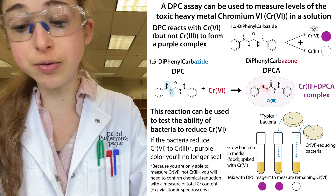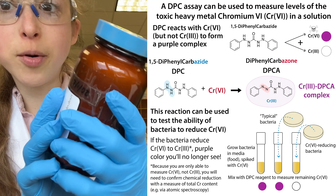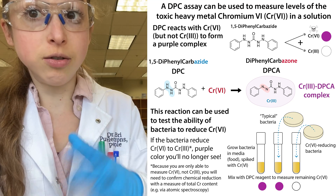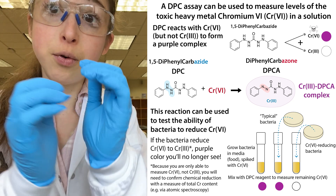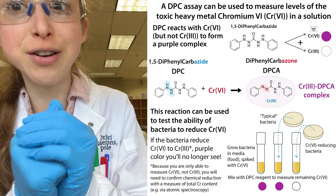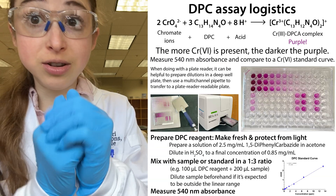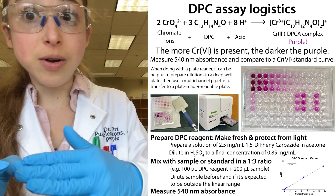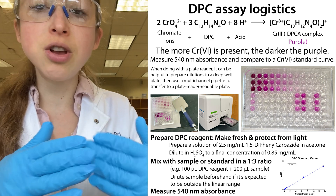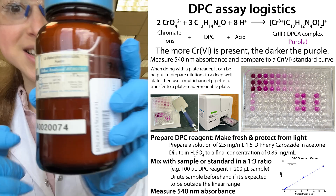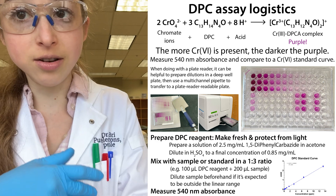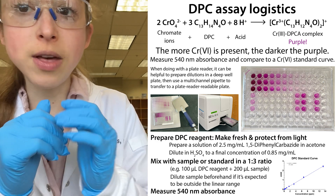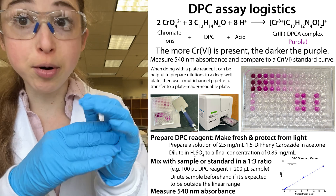Remember, chromium-6 reacts with diphenylcarbohydrazide to form diphenylcarbazone, leaving chromium-3, which then complexes with diphenylcarbazone to make the purple color. But if you remove chromium-6, there's no chromium-6 to oxidize the DPC, so the colored complex can't form. If the bacteria do what we want and remove chromium-6, we should see the purple color disappear.